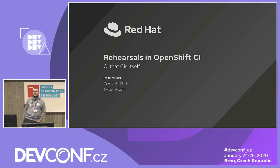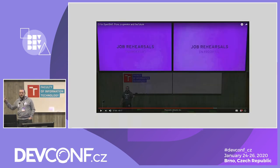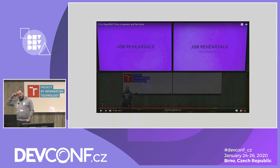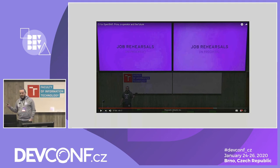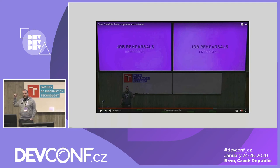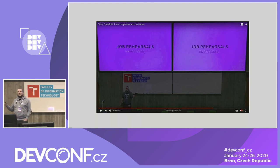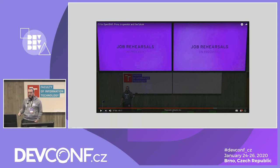Let me start this talk with a little bit of recursion. This is me a year ago standing on this stage — the hoodie was different — talking about OpenShift CI. This year, the talk about OpenShift CI was done by wonderful Sally and Urvashi in the morning. A year ago I was talking about this new cool feature called job rehearsals, which was in progress at that time. I'm very happy to be able to stand here today and talk about how it works and how it helps developers in OpenShift organizations set up their CI jobs.